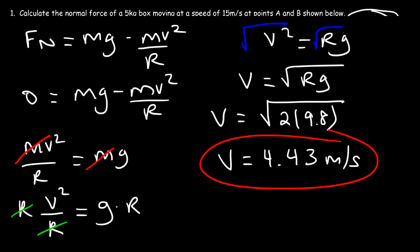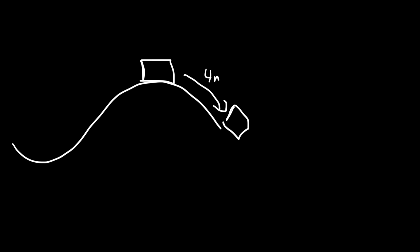If the box travels at a speed higher than 4.43 m/s at point B, it's going to lose contact with the road — the faster it's going, the more it will fly off. For example, at 4 meters per second it will slide down following the curvature of the road, but at 15 meters per second it's going to lose contact with the road.